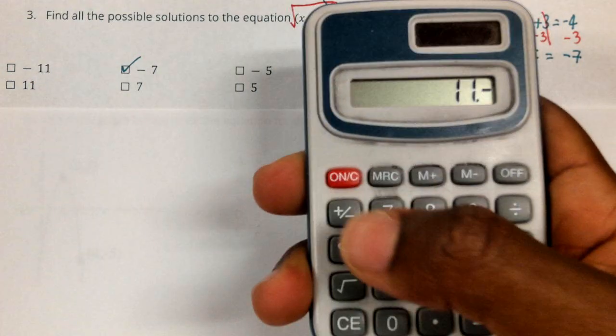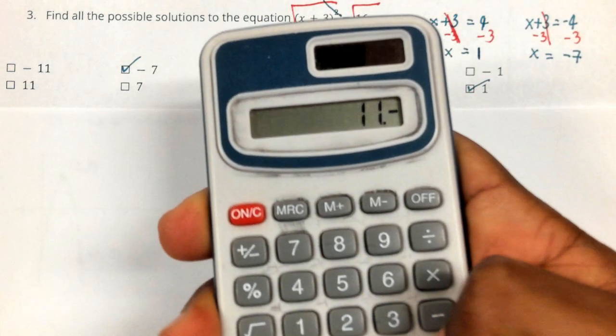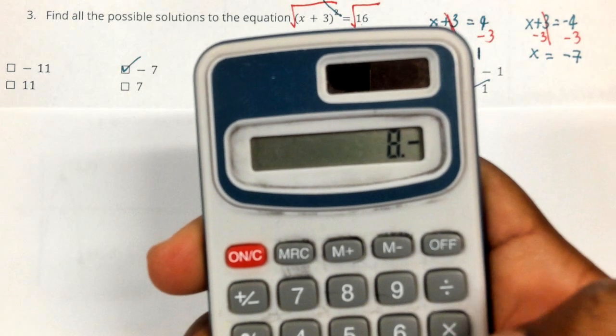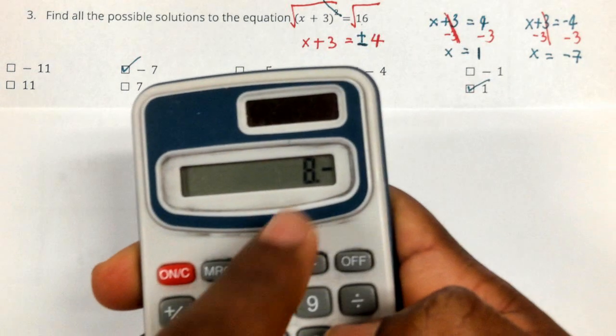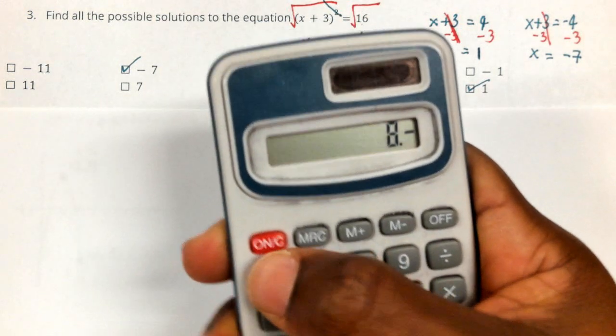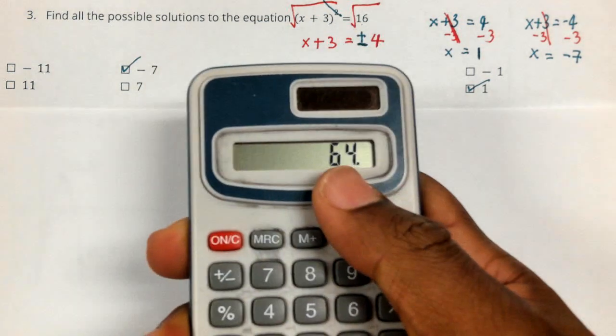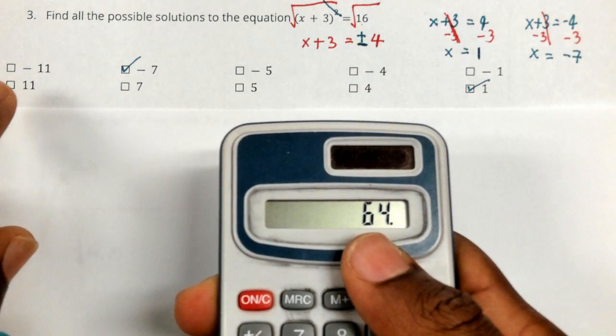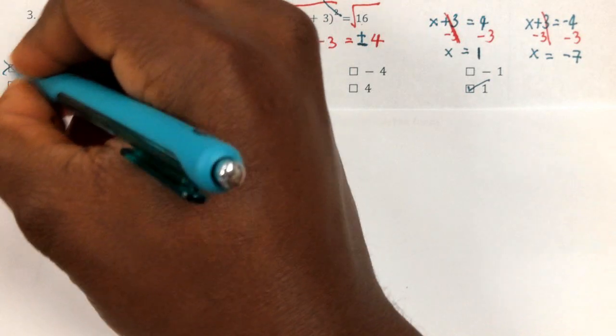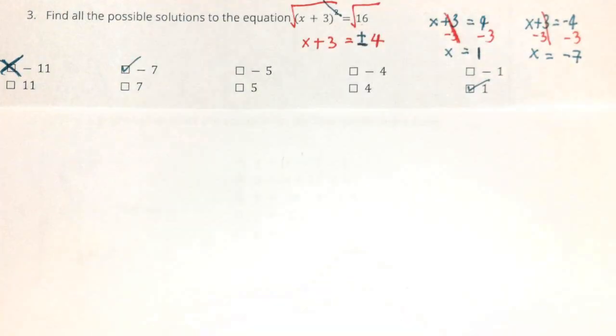So if I was supposed to do like the first one, I would do negative 11 plus three. And then square that, so I would multiply it by itself. So when I did that, I got negative eight. So then I would square it, so I'll multiply it by itself, and I would get 64. So automatically I would know that this is not going to work. So this one would be wrong.